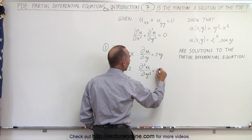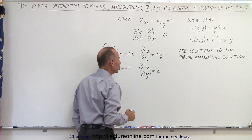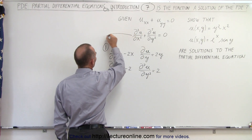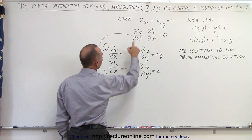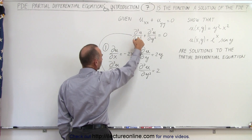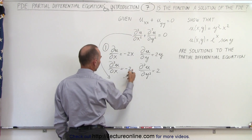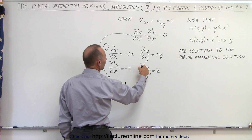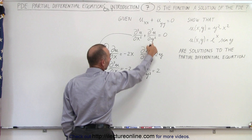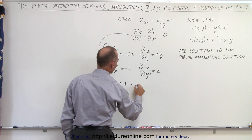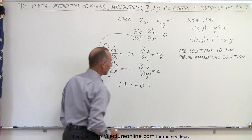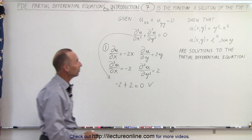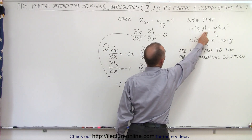Then if we take the second partial derivative of u with respect to y, we get simply 2. Now we plug that into our equation. The second partial derivative of u with respect to x is minus 2, plus the second partial derivative of u with respect to y which is plus 2, and sure enough that checks out — it is indeed equal to zero.